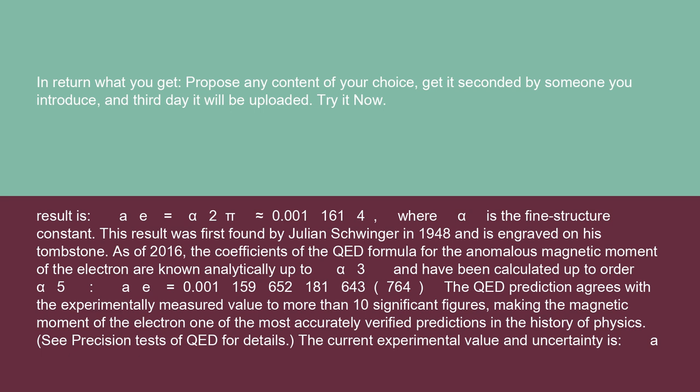As of 2016, the coefficients of the QED formula for the anomalous magnetic moment of the electron are known analytically up to α³ and have been calculated up to order α⁵. a_e equals 0.001159652181643764.